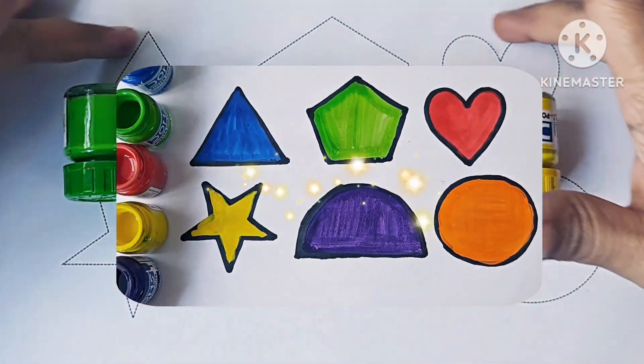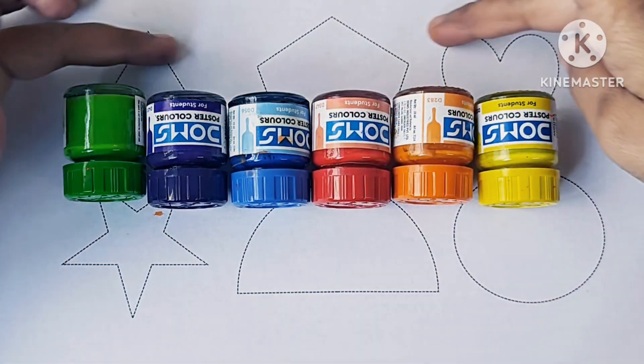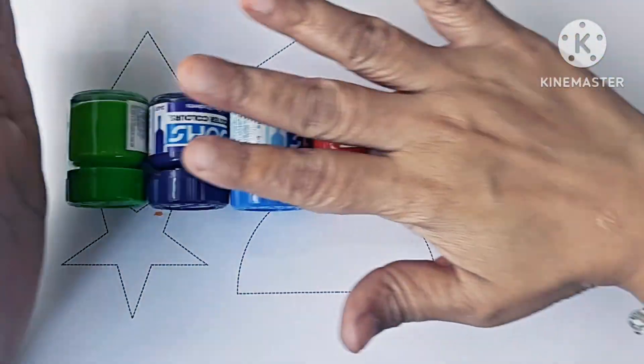Kids, let's learn some 2D shapes. These are our shapes and these are our colors.